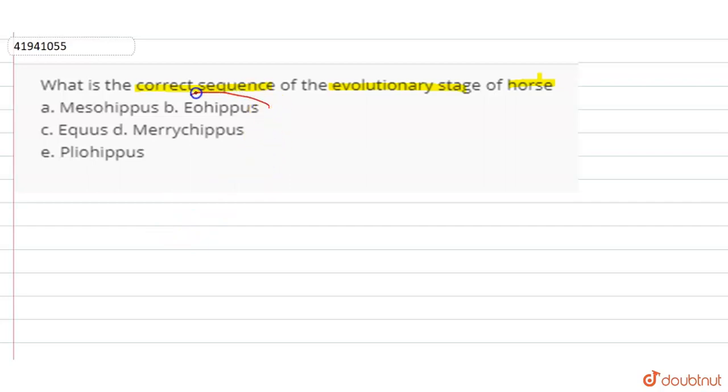First of all, Eohippus came. So Eohippus is first. Then Mesohippus.